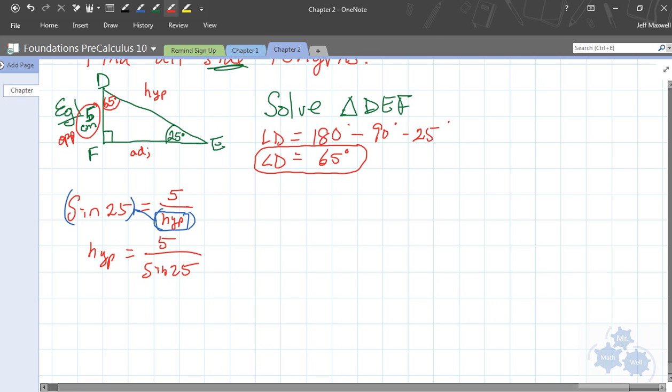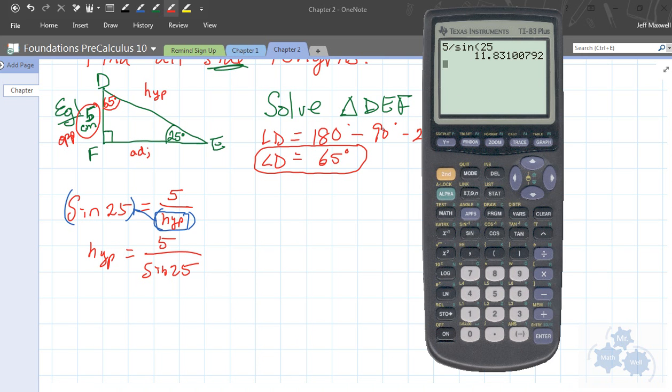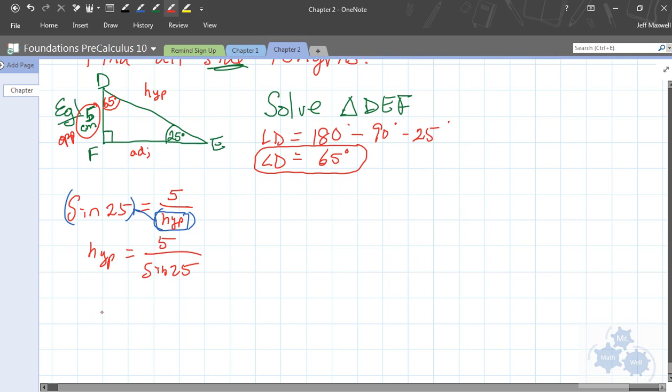And you go ahead and you figure that out. Calculator. So, on the calculator, five divided by sine of 25 is 11.83. So, the hypotenuse is 11.83 centimeters.